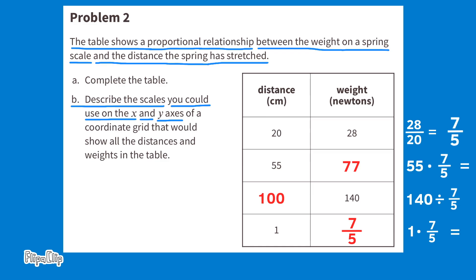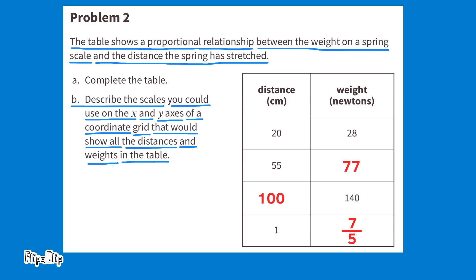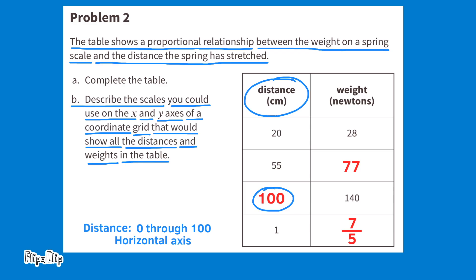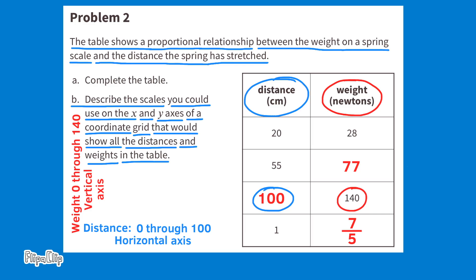Part B: describe the scales you could use on the x and y axes of a coordinate grid that would show all the distances and weights in the table. I'd have to make sure the graph was large enough to fit distances from 0 to 100 on the horizontal x-axis, and tall enough to represent up to 140 newtons on the vertical y-axis.